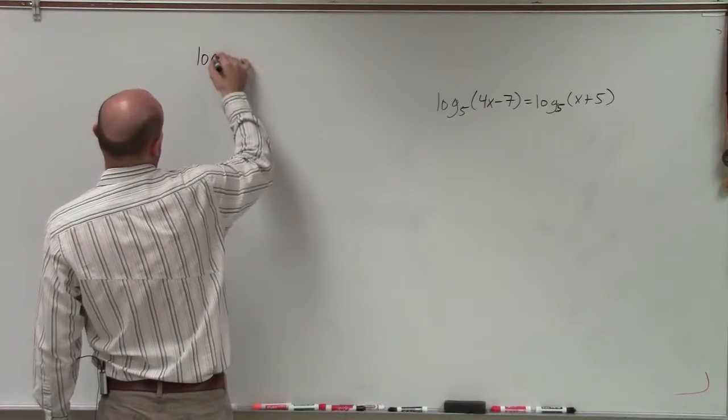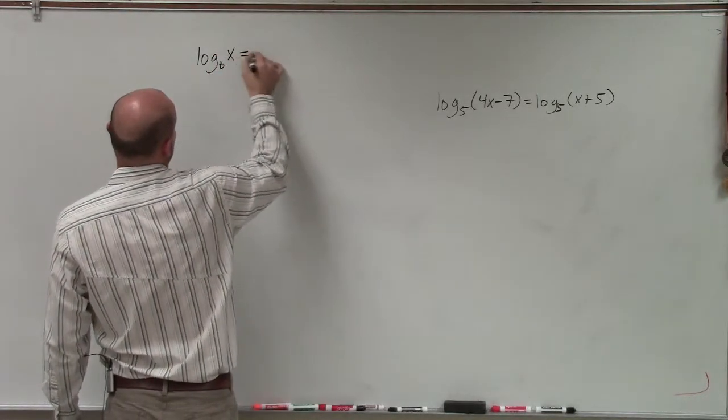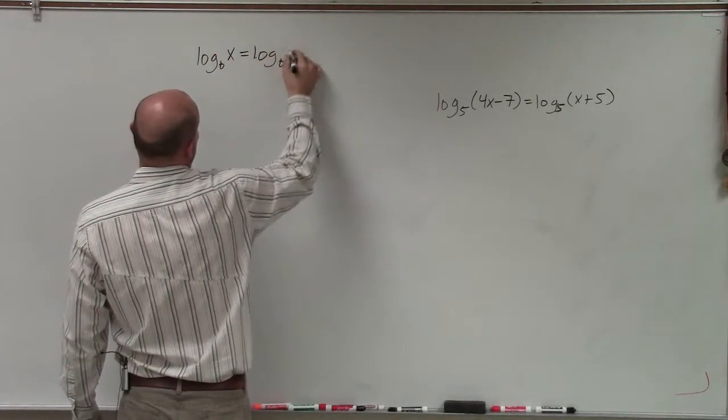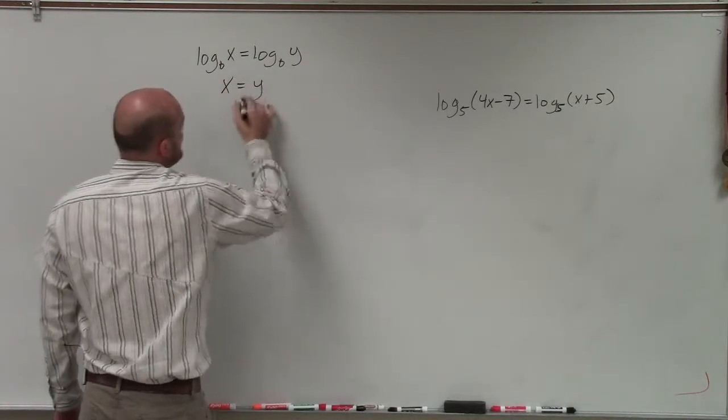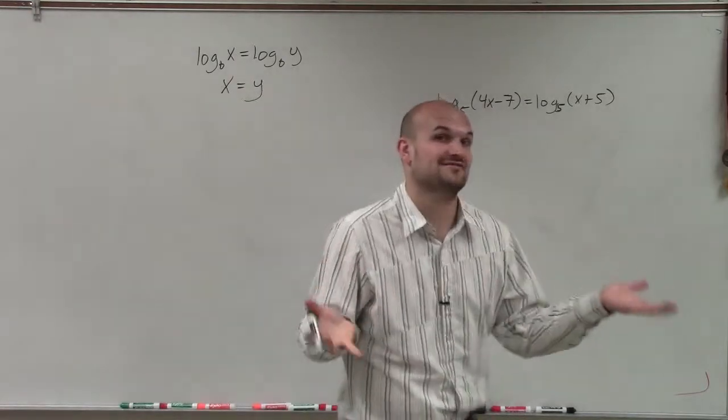Therefore, I need to remember my one-to-one properties. What the one-to-one property states is if I have two logarithms with the same base, then what I'm evaluating each logarithm for have to be equal to each other.